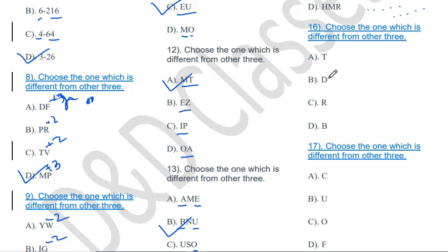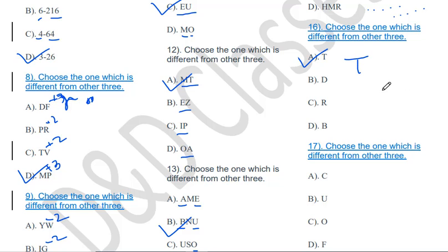Choose the one which is different from the other three: T, D, R, B. T will be the odd one out. Because T is formed by two straight lines only, whereas D, R, and B are all formed by a combination of straight lines and curved lines. So T is the odd one out.